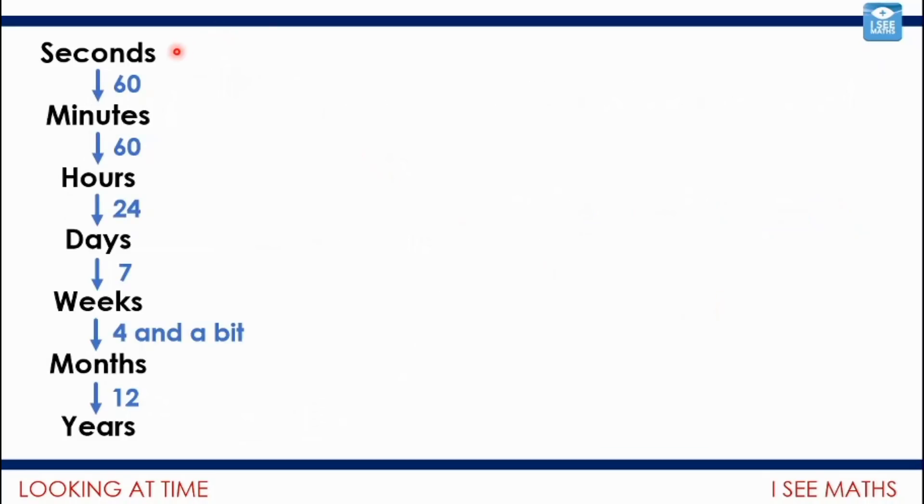In our conversions between time, we've got 60 seconds to minutes, minutes to hours, hours to days. 24 hours in a day, seven days in a week. Weeks, it's just a bit more than four in most months, apart from February. And then 12 months in a year. We'll need to use those figures when we're converting between times.